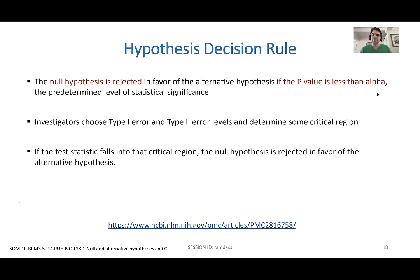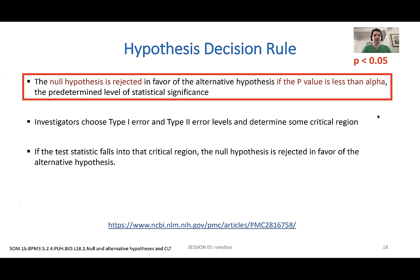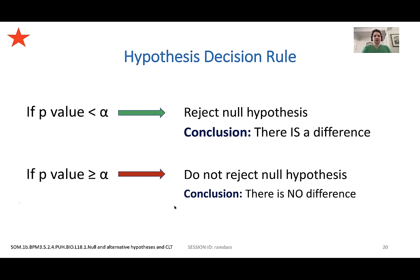P value less than alpha — if we accept alpha as 0.05 and the P value is less than that, we show statistical significance. There are clinical circumstances where you could say only two-thirds of my patients show benefit but at least some do — there is a difference between looking at statistics versus the actual clinical situation. I have a slide on that coming up.